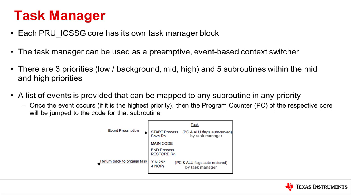When a higher priority event occurs, the task manager automatically saves the current program counter and flags and provides a new program counter to start a new task. The firmware is responsible for saving off any internal registers it will override during the task. When the firmware completes the task, it needs to restore the internal registers, issue the command XIN 252 to signal the task manager that the subroutine is complete, and then issue four no-op commands. The task manager will then auto-restore the program counter and flags.